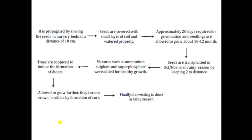Generally, transplanting is done in October and November. In the month of October, manure and fertilizers are added — these are substances required for the healthy growth of the seedlings. The manure required in case of cinnamon bark is ammonium sulfate and superphosphate. Then trees are coppiced to induce the formation of shoots.